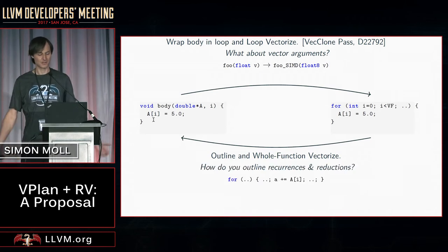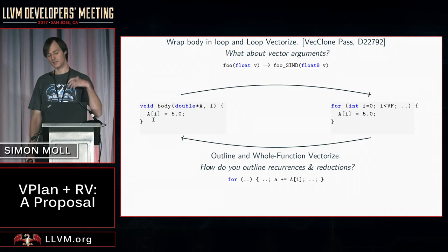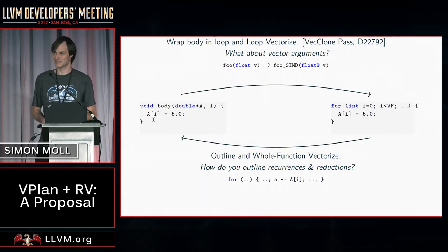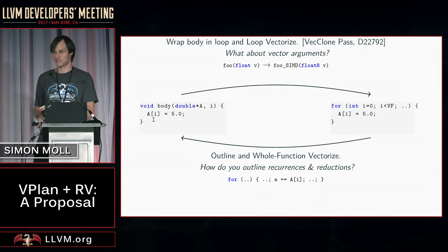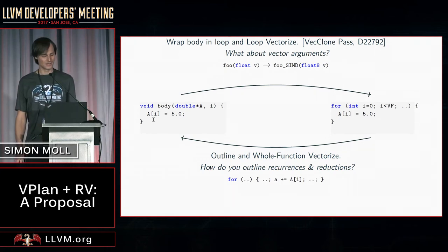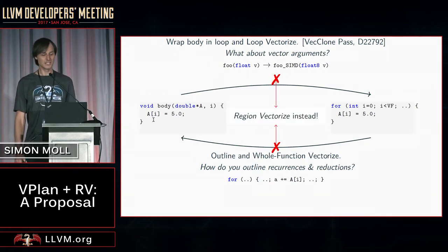But what do you do about recurrences and reductions? Those will be phi nodes in the loop header. If you outline the loop header, you probably end up with memory accesses and other issues — it's still not clear how to do that. It's kind of awkward because you're trying to work around the fact that you don't actually support loop vectorization, just trying to make it work with whole function vectorization. So, what we say is: do neither of these things — just have region vectorization instead.